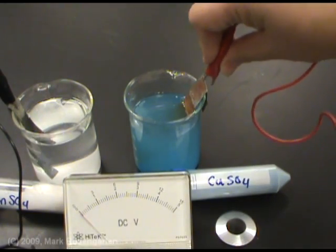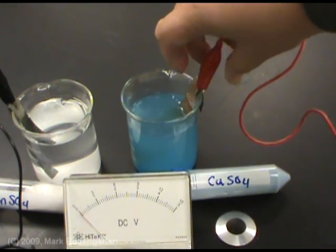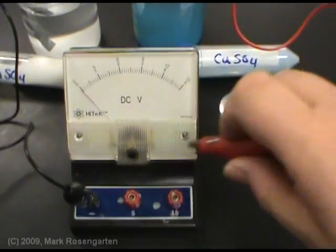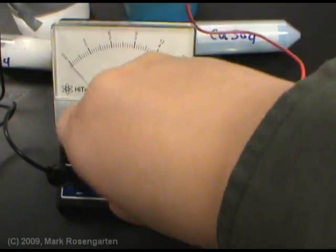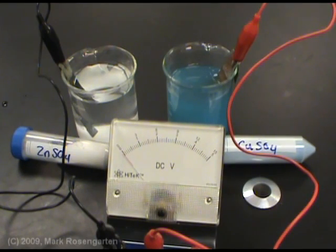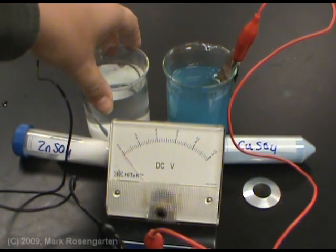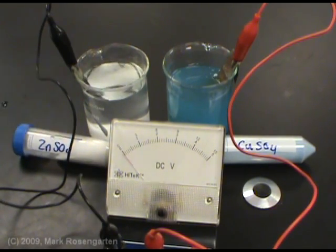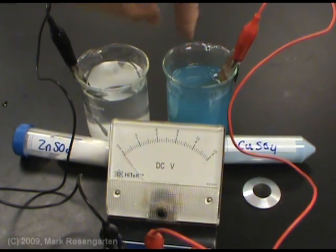Then we hook the copper up to the positive terminal of our voltmeter. Now apparently there's nothing happening. Our voltage is still zero. And the reason is because we have an external circuit, wires, but we need an internal circuit. We need to complete the circuit by connecting the two solutions.